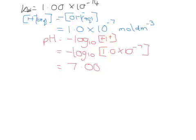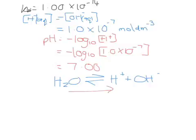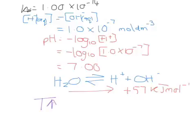All equilibrium constants are temperature dependent. In the equilibrium reaction for water, the forwards reaction is actually endothermic at about 57 kJ mol⁻¹. Applying Le Chatelier's principle: as we increase temperature, the reaction will favour the endothermic side, pushing it to the right and producing more hydrogen ions. The increase in hydrogen ions means the pH will actually decrease.